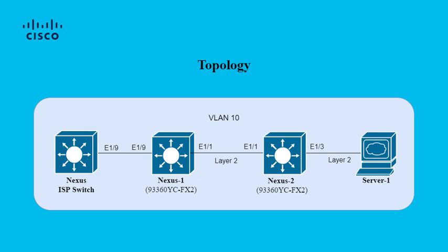Here's a look at our topology. We have three Nexus switches, one representing an ISP and two representing our environment, with a server connected to Nexus 2. Let's say our server team contacts us, complaining that they're receiving errors on server 1. To confirm this, we log into Nexus 2, where this server is connected.